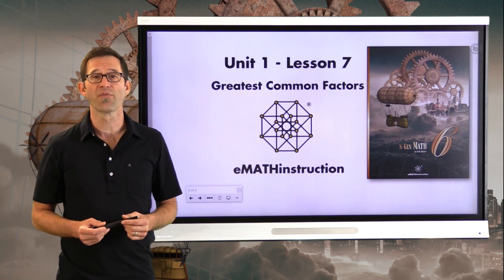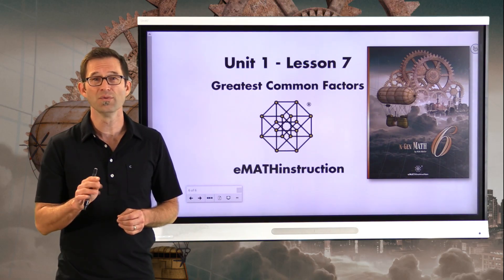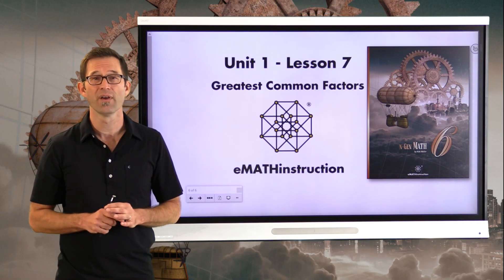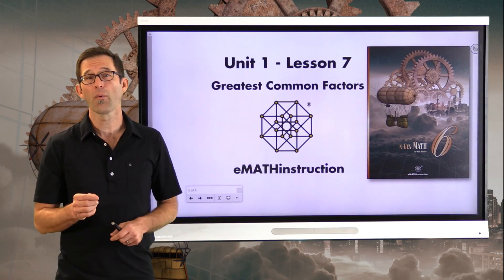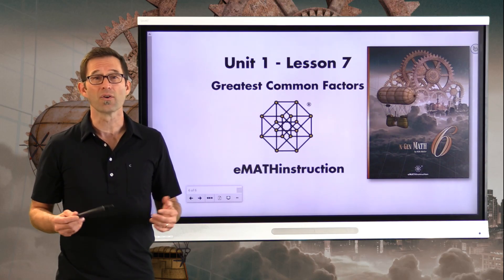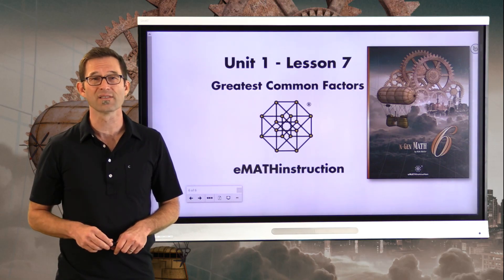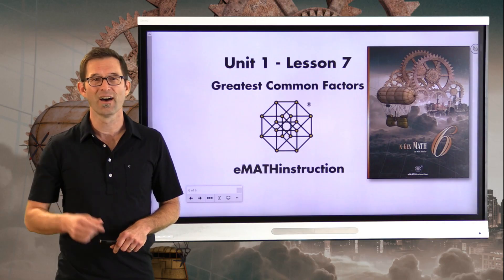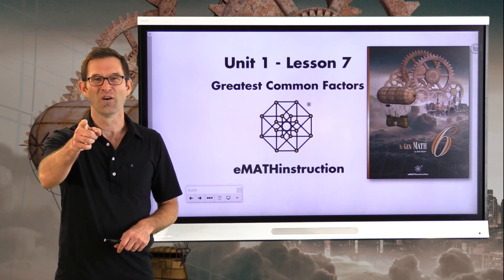So, three different ways of thinking about finding GCFs: listing factorizations and finding the largest common factor; thinking about the largest number that divides into both without a remainder; and prime factoring both numbers to identify common prime factors. We will use the GCF in our next lesson. For now, thank you for joining me, Kirk Weiler, for another NGen Math 6 lesson by eMath Instruction. Until next time, keep thinking and keep solving problems!